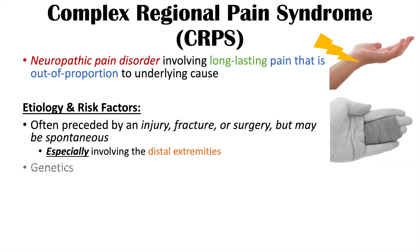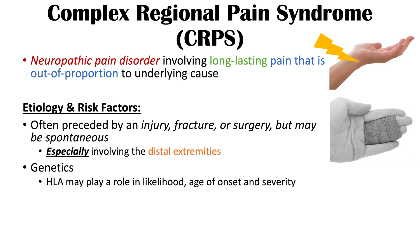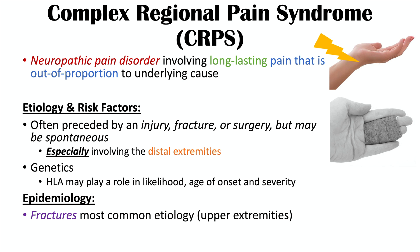For risk factors, genetics plays a role as to who gets this condition. Certain human leukocyte antigen, or HLA, alleles play a role in the likelihood, age of onset, and severity. Certain HLA alleles increase the likelihood of having this condition after a potential injury, decrease the age of onset, and worsen severity. Although the condition is preceded by injury, fracture, or surgery, fractures are going to be the most common etiology.